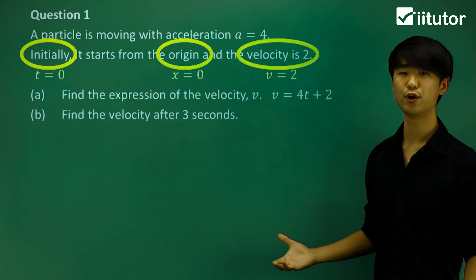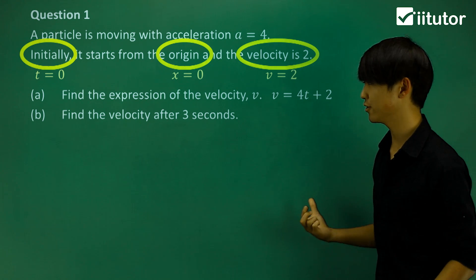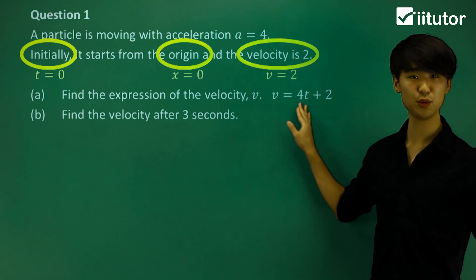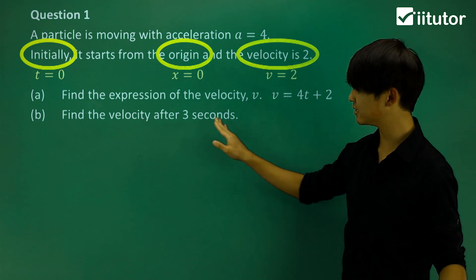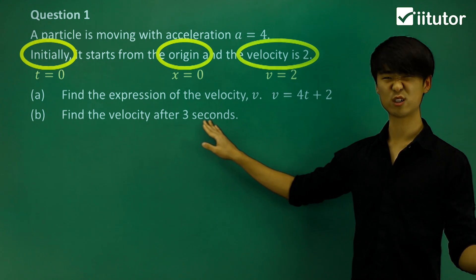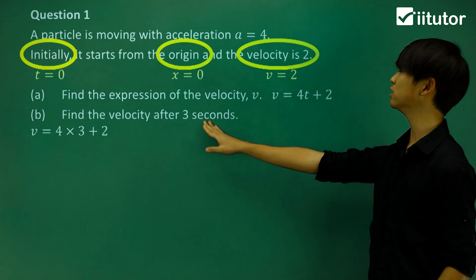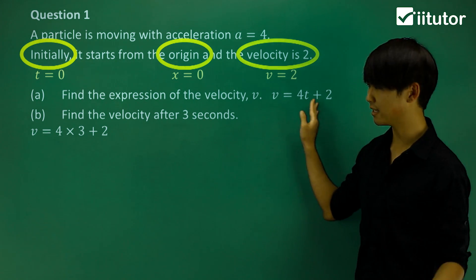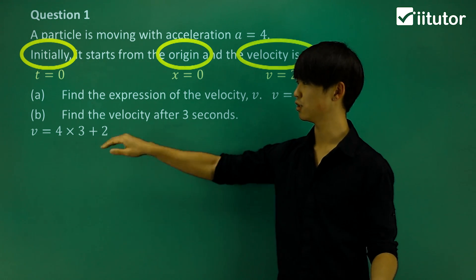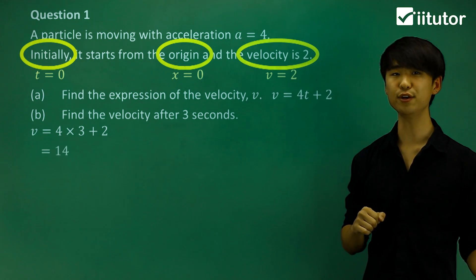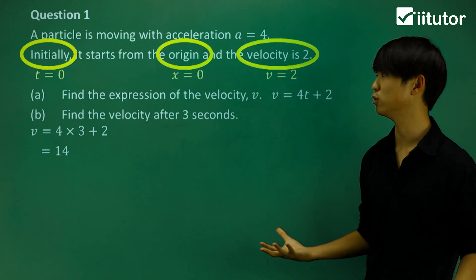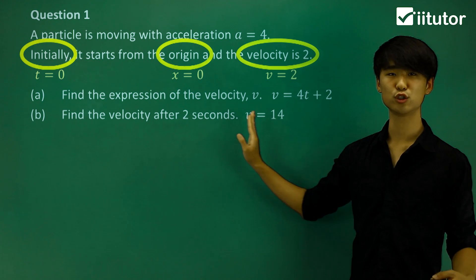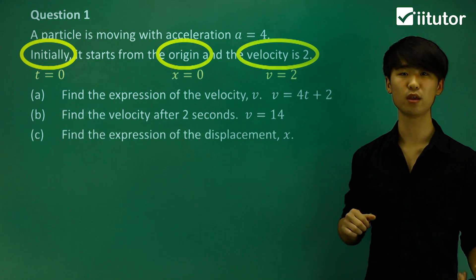Part b: find the velocity after 3 seconds. Velocity is v = 4t + 2, and after 3 seconds t = 3. Substituting: v = 4(3) + 2 = 14. So v = 14 after 3 seconds.